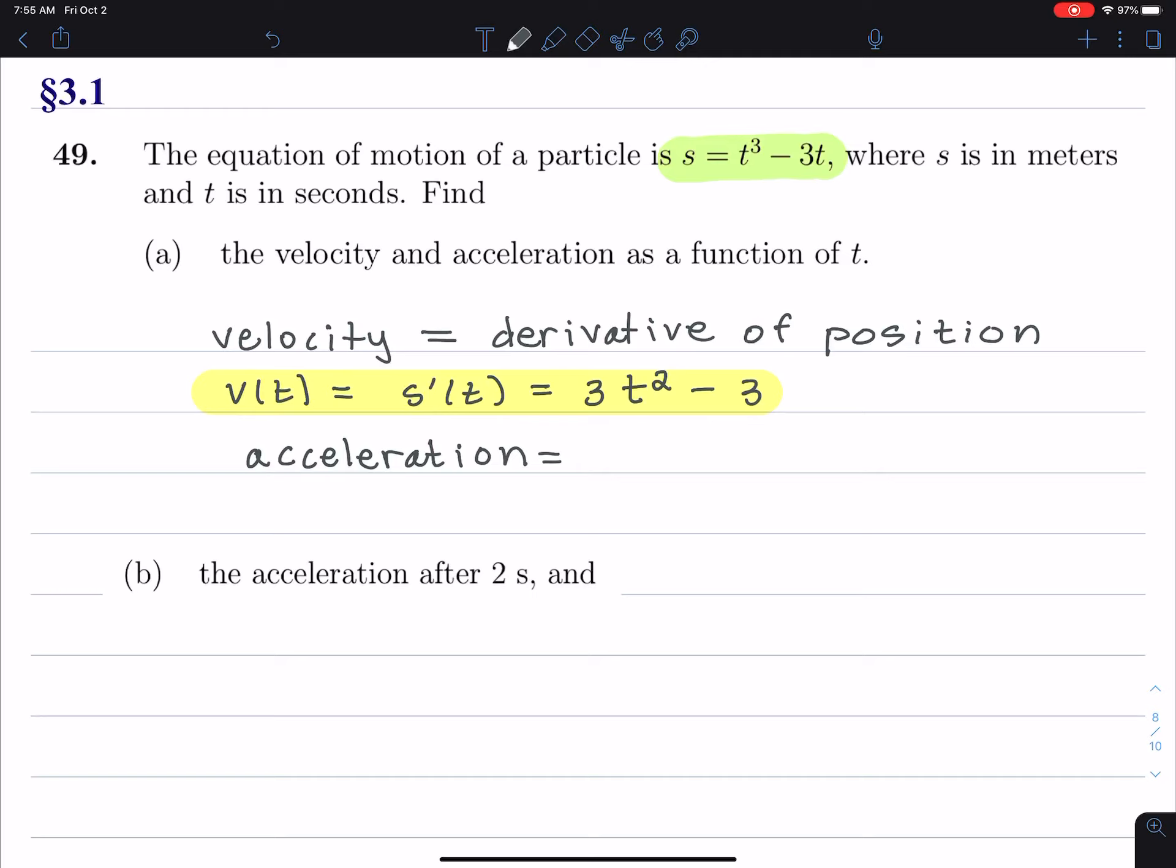rate of change is, because rate of change is derivative, acceleration is the derivative of velocity. Derivative is rate of change. And the rate of change of the position is the velocity. The rate of change of velocity is acceleration.